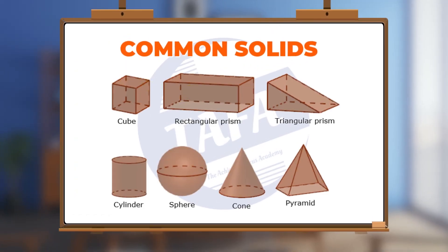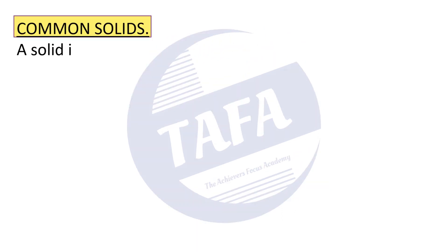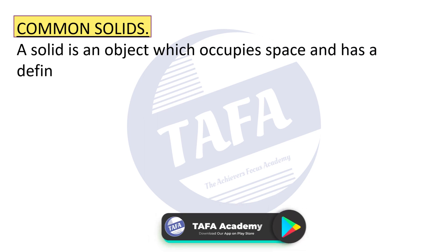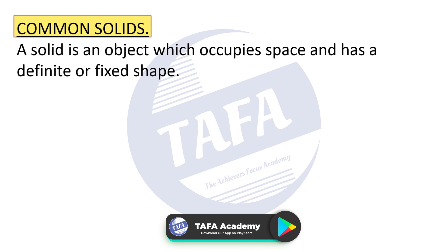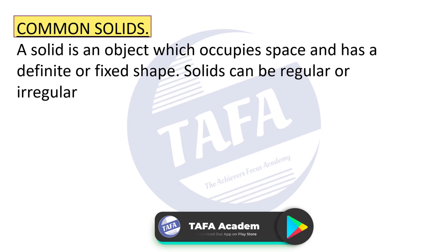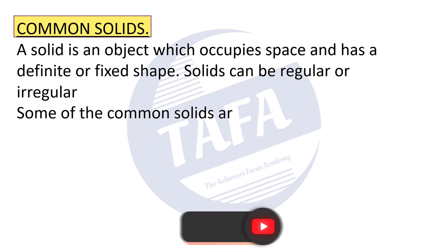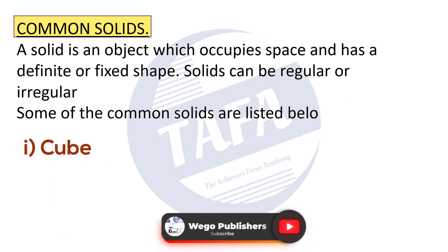This is the topic of common solids. A solid is an object which occupies space and has a definite or fixed shape. Solids can be regular or irregular. Some of the common solids are listed here.